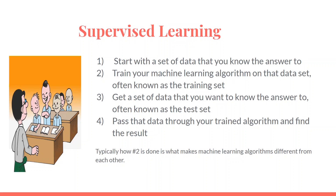One is called the training set and the other the testing set. The general ratio between training and test set is 80-20 or sometimes 70-30. We feed the training set into the machine learning algorithm so it can train — learning that if input is this, the output will be that. Once the model is trained, we evaluate its efficiency using the testing set, matching predictions against actual outputs and calculating accuracy.